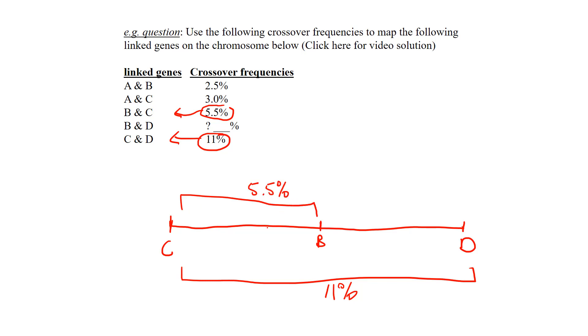Now they're saying let's go to the next highest, and that's how you sequentially go down from highest to lowest crossover frequency. The next one is 3 percent, and that is for A and C.